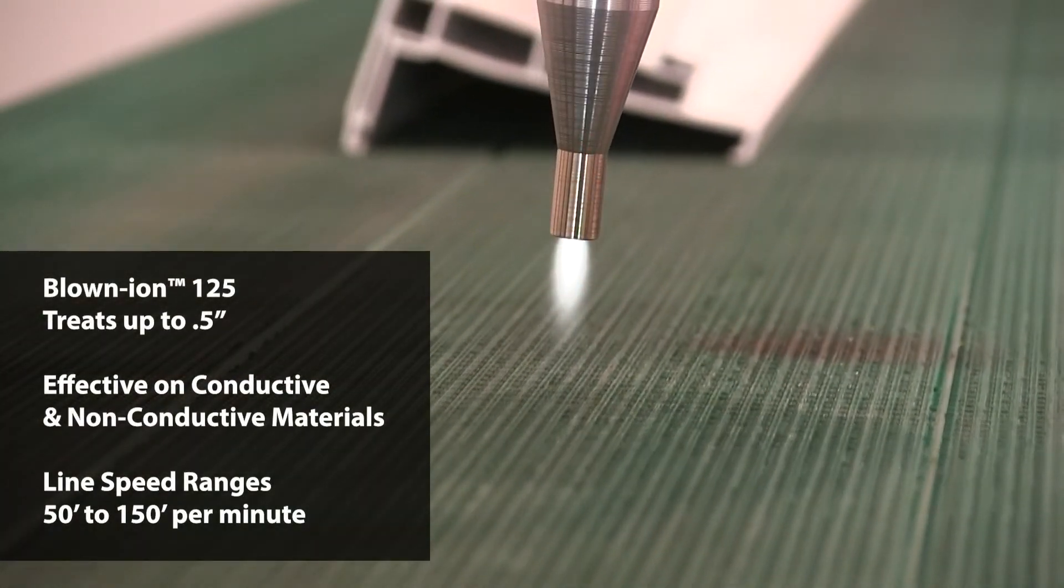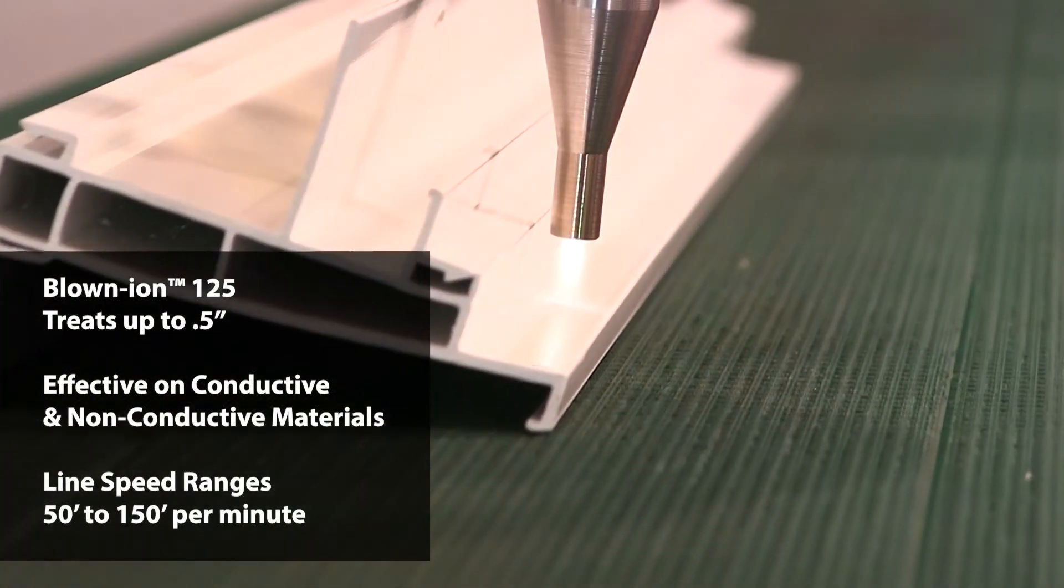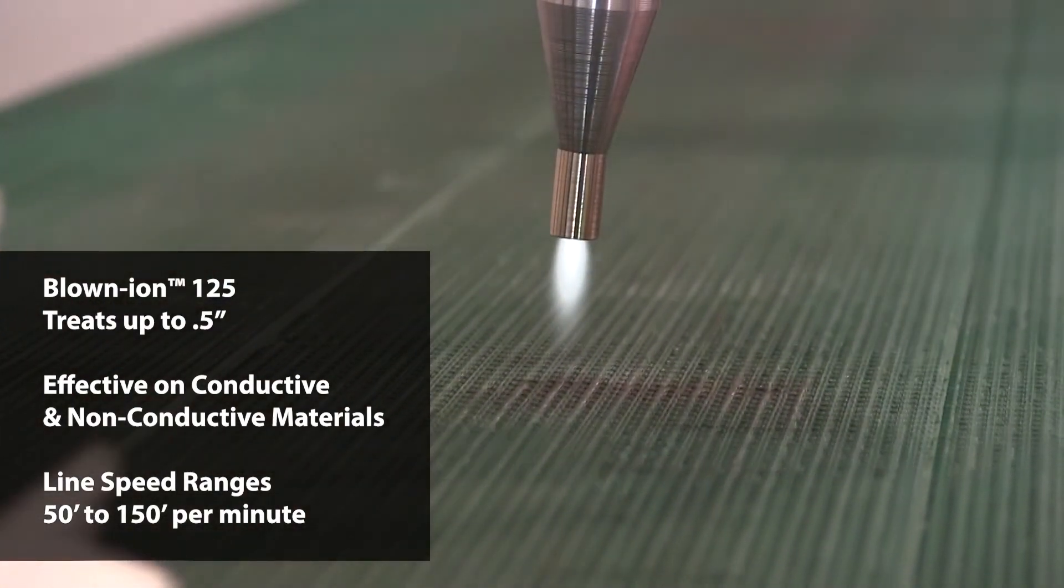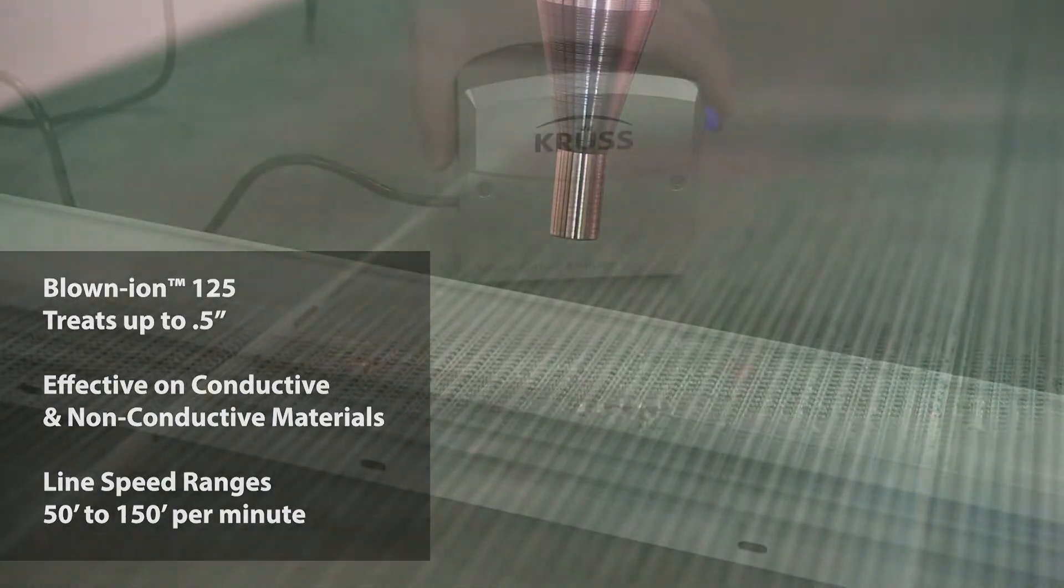The blown ion 125 treats up to a half inch and is effective on most conductive and non-conductive materials. Typical speed ranges from 50 to 150 feet per minute.